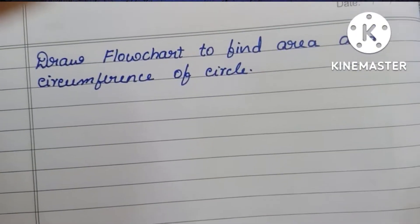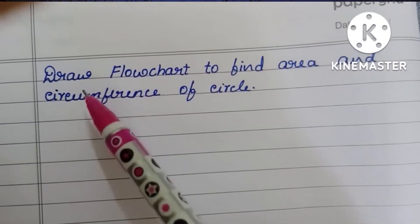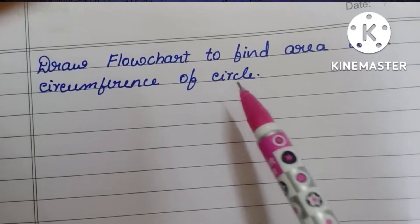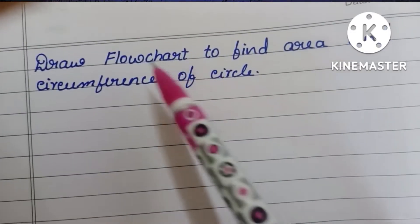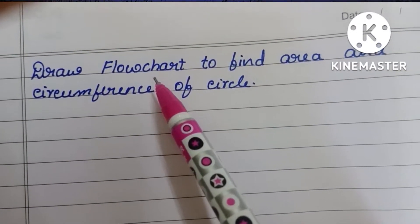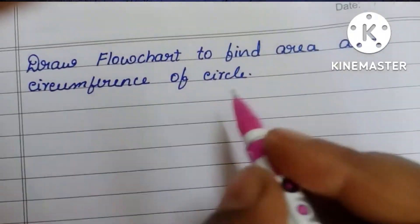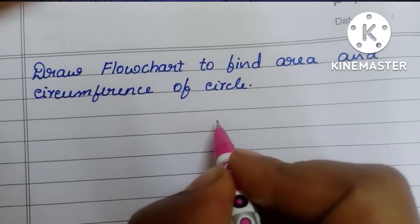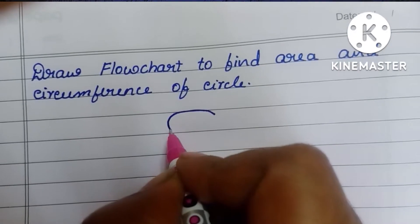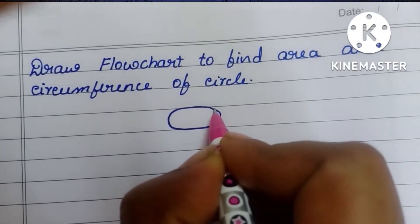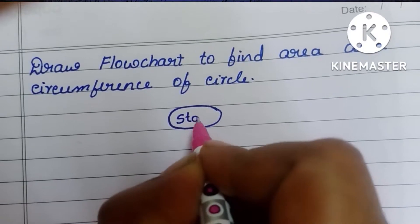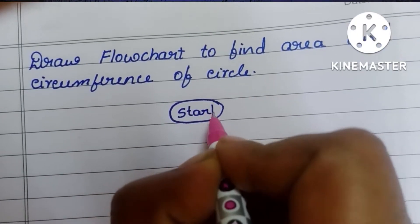In this video we are going to learn how to draw a flowchart to find the area and circumference of a circle. A flowchart is a graphical representation of a solved problem. A flowchart always starts with a start statement, written within an oval shape.